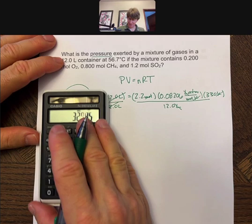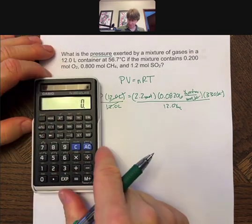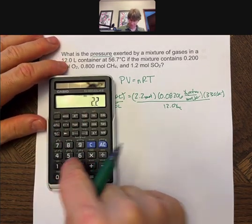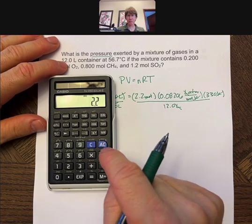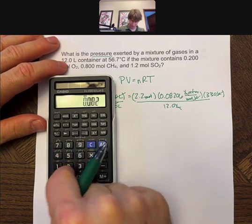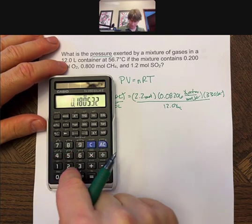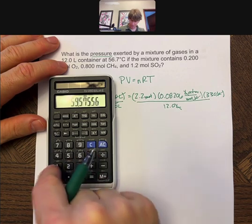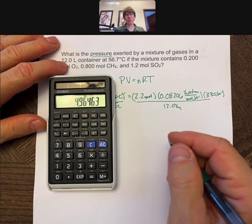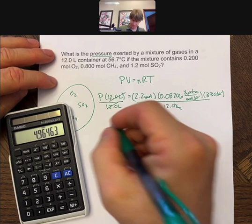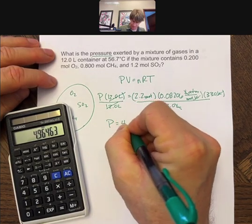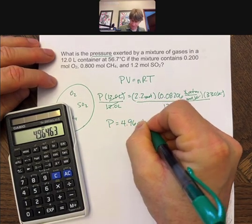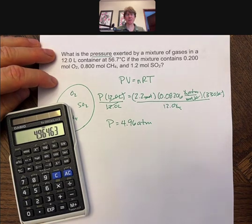However, I do enjoy canceling units, and then we have to multiply. So it's going to be 2.2 times 0.08206 times 330 divided by 12, and I get 4.96 atmospheres for my final pressure for this.